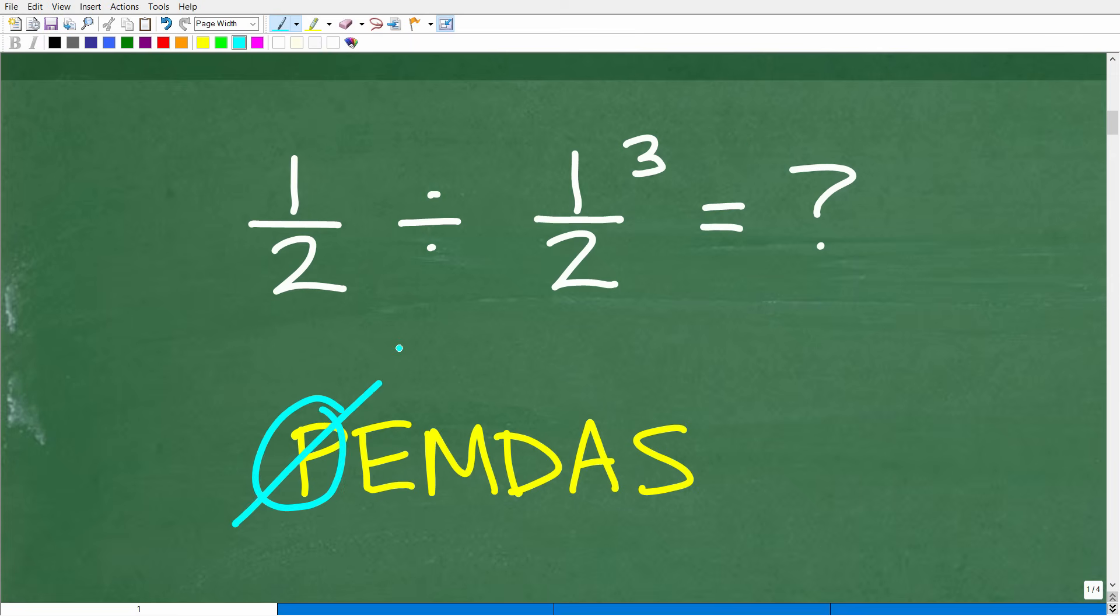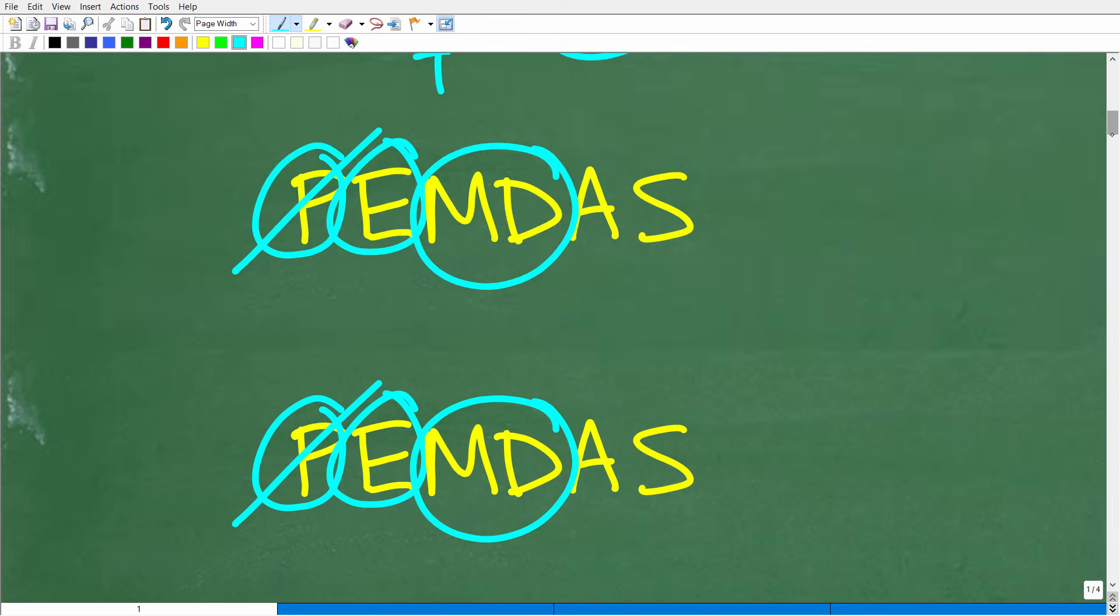do we have any parentheses? No. Okay, so there's no parentheses. So, let's move on. Do we have any powers, any exponents? Yes. So, that's what we're going to have to do first. We're going to have to figure this out before we move on to multiplication and division. And obviously, we have division right there. So, let's go ahead and do this right now.